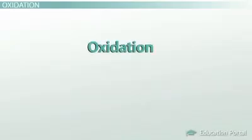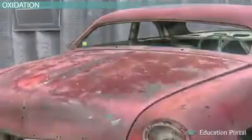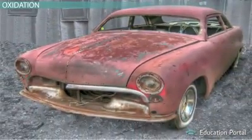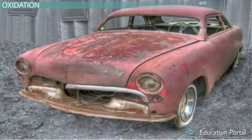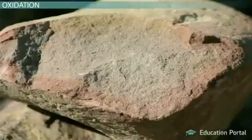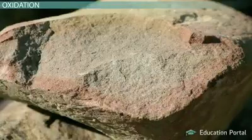Another type of chemical weathering is oxidation. Oxidation is a reaction of a substance with oxygen. You are probably familiar with oxidation because it is a process that causes rust. So just like your car turns to rust through oxidation, rocks can get rusty if they contain iron.